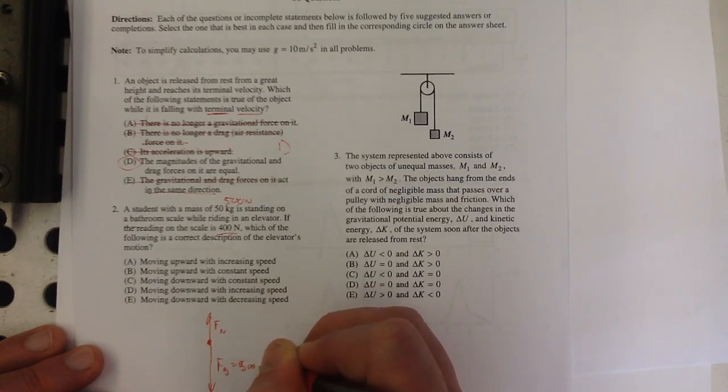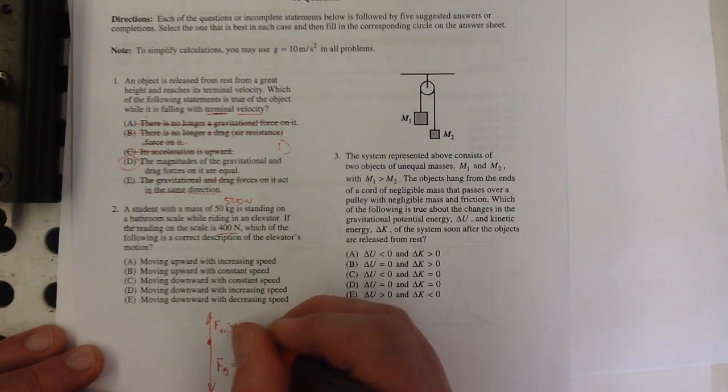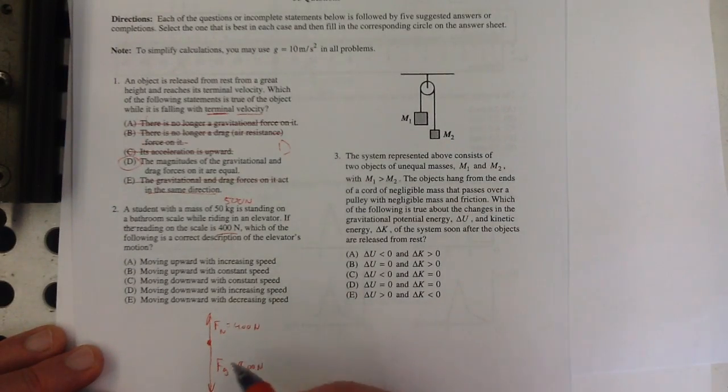This is the 500 newtons, and this is the 400. Well that means there's unbalanced force downward, right? That means they're accelerating downward.